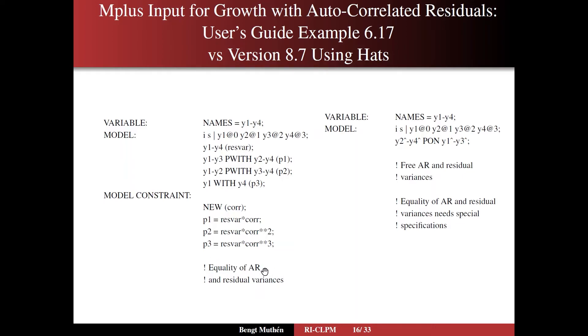The autoregression coefficients are equal across time, and the residual variances are equal across time. So it's a little complicated to specify, particularly if you have, say, 10 time points. Then you will have a lot of model constraints here. So in the new version 8.7 hats language, here's how you specify it in the right column here. Same growth model, but then you just say,